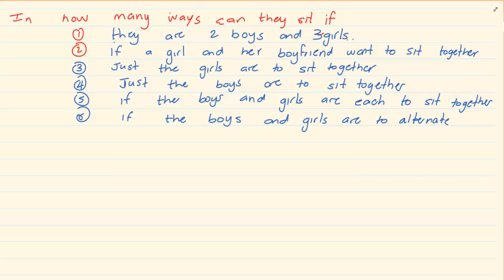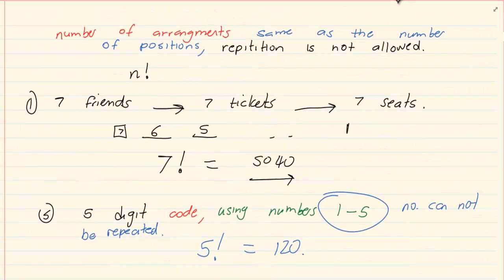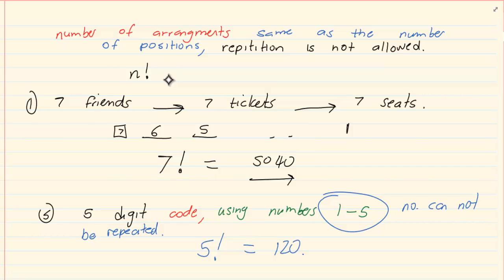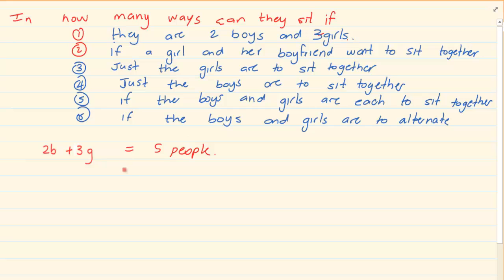Let's take the first one. In how many ways can they sit if there are two boys and three girls? That means I have five people. If people are sitting down, the first person would have five options, but once they sit down the next person would only have four options because that space is no longer available. So we are using the factorial. The number of arrangements is based on a factorial — five times four times three times two times one. So if we have five people, the answer would be five factorial, which is equal to 120 options.